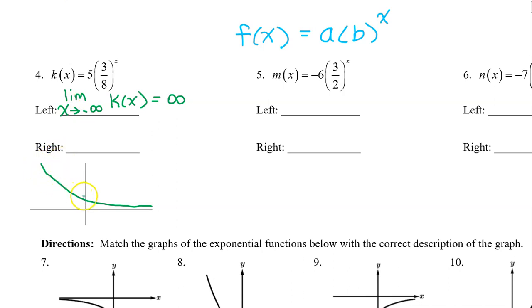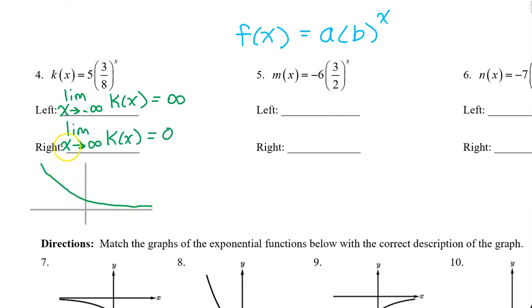As we head towards the right, k of x is approaching the x-axis. Therefore, the limit as x approaches positive infinity of k of x is zero.